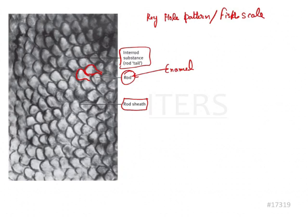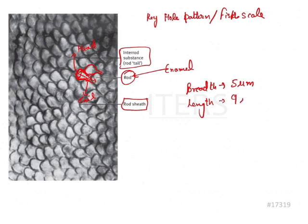If you see, this is the head and this area is the tail. The breadth of the head, which is the maximum diameter, is around 5 micrometers. If you consider the length of the whole enamel rod, the length will be around 9 micrometers. These are very important values to remember.